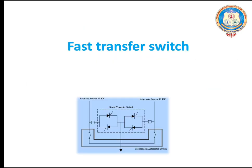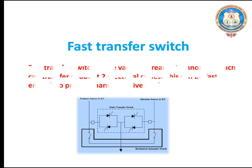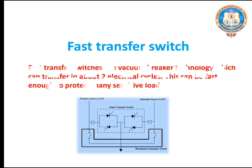What is a fast transfer switch? Fast transfer switches use vacuum breaker technology which can transfer in about two electrical cycles. This can be fast enough to protect many sensitive equipments.